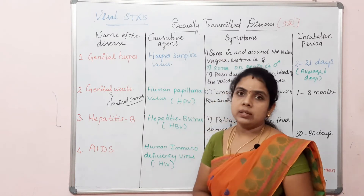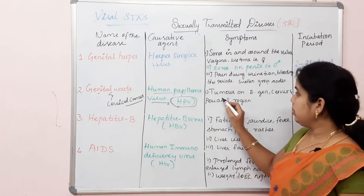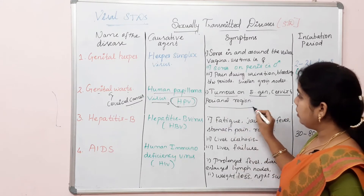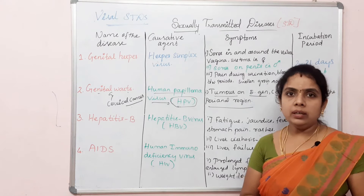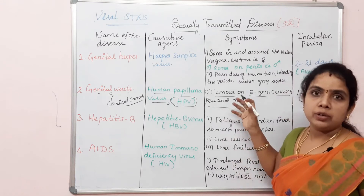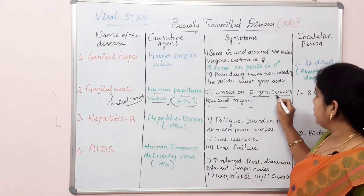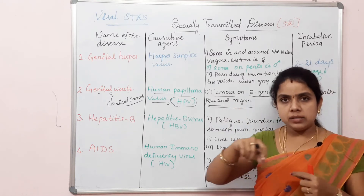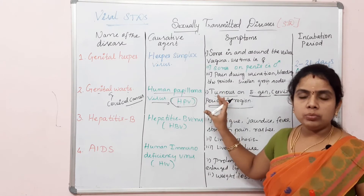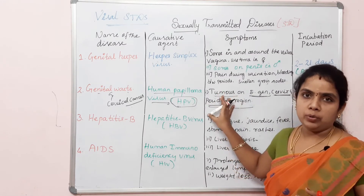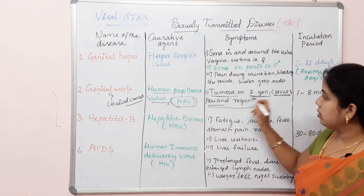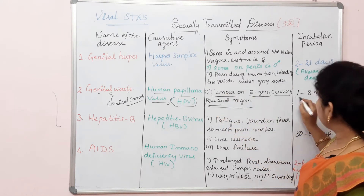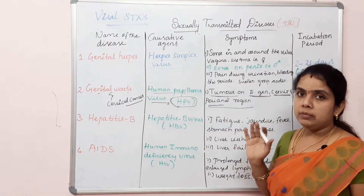The major symptoms of genital warts are tumors on the external genitalia, cervix, and peri-anal region. The incubation period is 1 to 8 months.